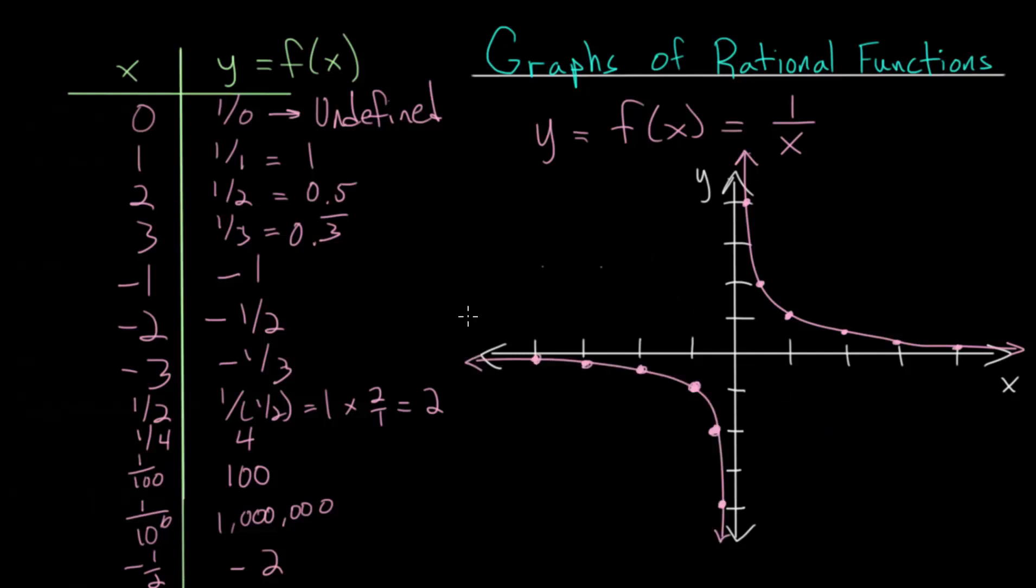After filling in the curve with the points we know, we can see that as x gets smaller and smaller, or closer to zero from the negative side, that the y value gets bigger and bigger in the negative direction. So as x gets very close to zero from the left, the function, the y value, gets very close to negative infinity.